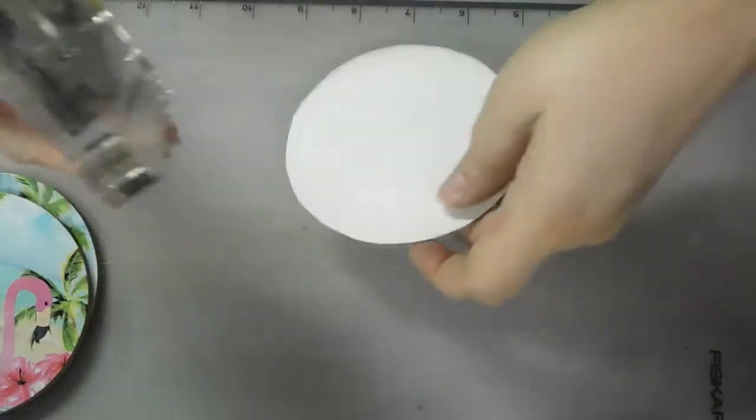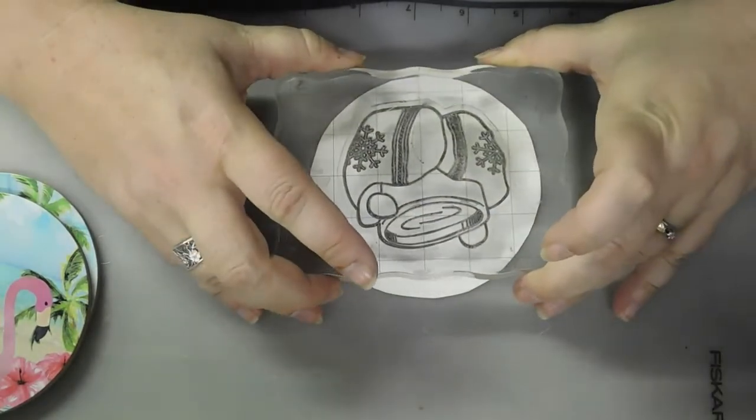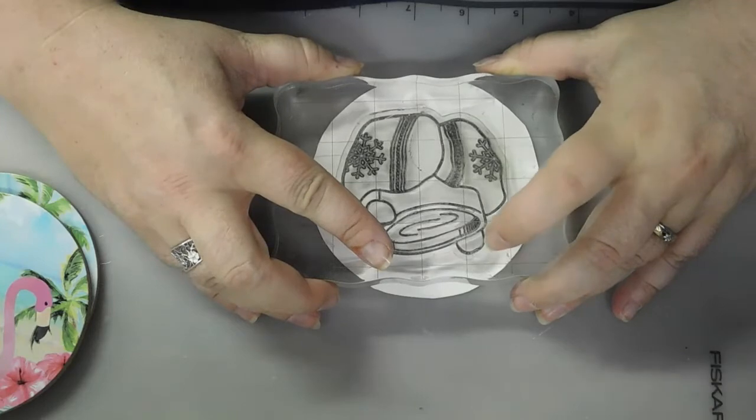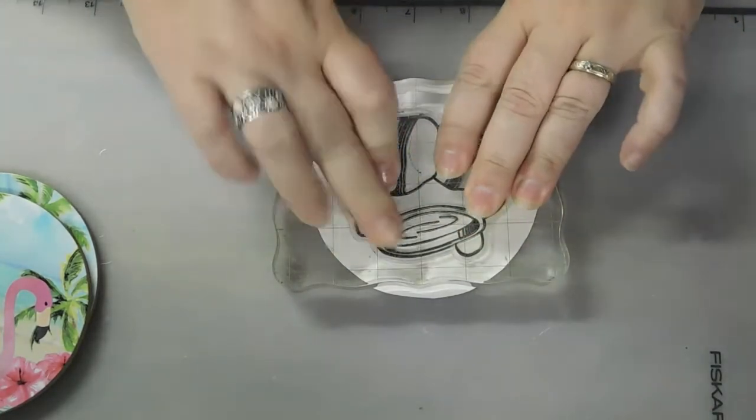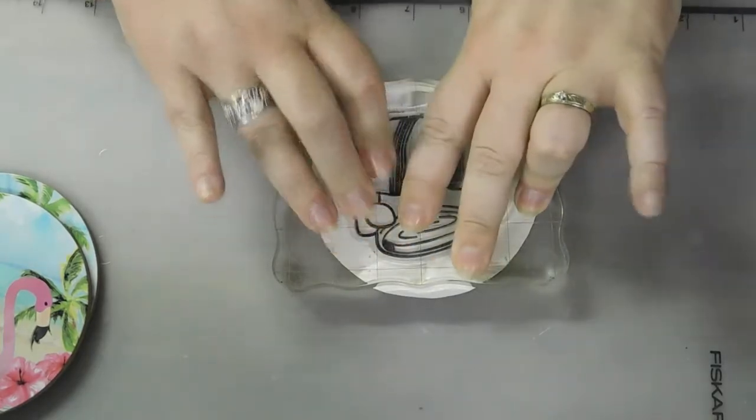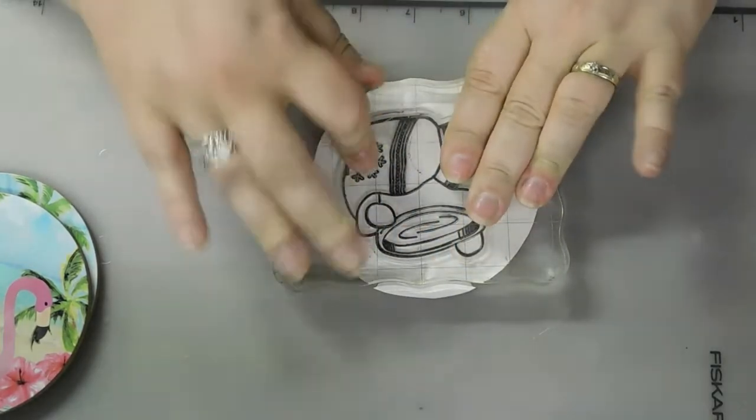And then once you color over it, well, I don't know how I got that on there. Once you stamp with that and color it, you don't have any of the black lines. So that, I really like using the antique linen to stamp with.